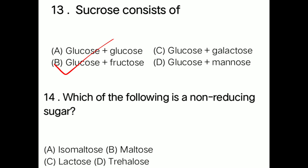Question: Which of the following is a non-reducing sugar? Option A isomaltose, option B maltose, option C lactose, option D trehalose. Correct answer is option D: trehalose. Trehalose is a non-reducing sugar.